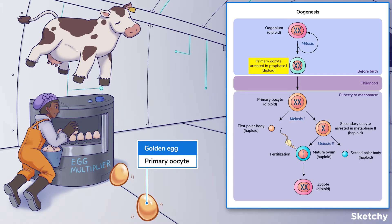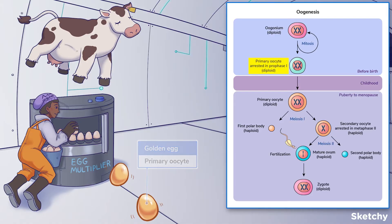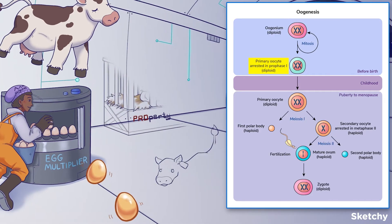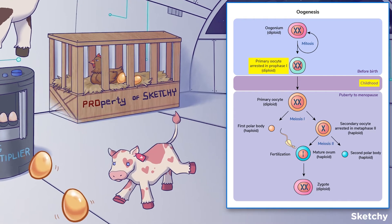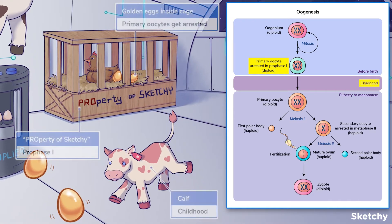The primary oocytes then enter meiosis, but get arrested during prophase 1. And so, they'll remain arrested throughout childhood. Let these golden eggs locked inside a cage behind the cute, cuddly calf serve as a visual reminder.